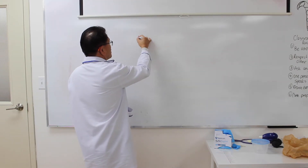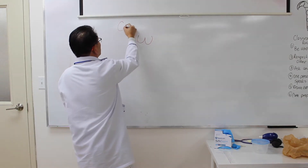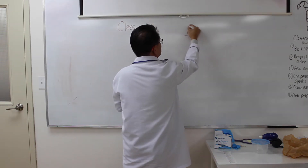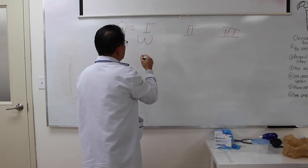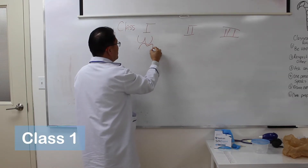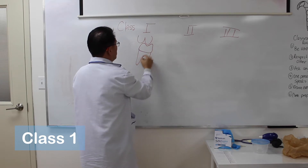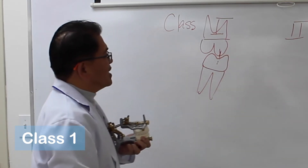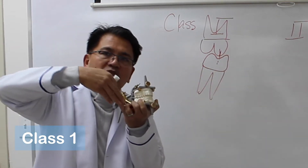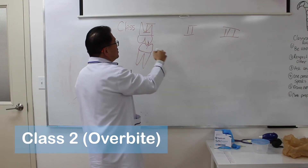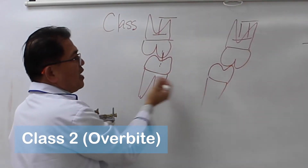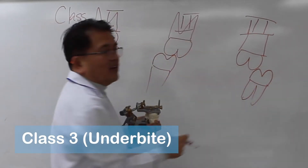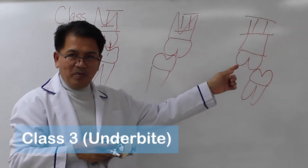We classify occlusions into three different classes: Class 1, Class 2, and Class 3. In Class 1, the upper molar is related to the lower molar so that the cusp and the fossa are in a tongue-and-groove relationship. In Class 2, the lower molar is behind the upper molar. In Class 3, the lower molar is in front of the upper molar.